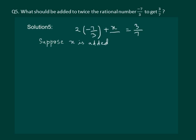We now have a linear equation in one variable: minus 14 by 3 plus x is equal to 3 by 7. We have to find the value of x. So let us transpose minus 14 by 3. We get x is equal to 3 by 7 plus 14 by 3.